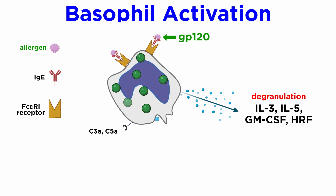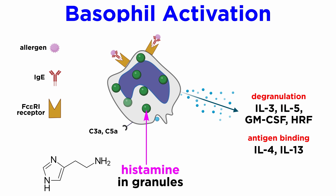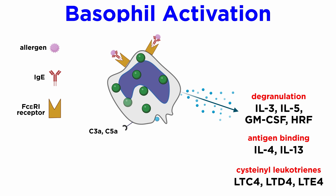The GP120 protein from HIV is considered to be a superantigen-binding IgE, leading to secretion of IL-4 and IL-13. Histamine is the major preformed mediator stored in the basophil granules. Basophils produce three cysteinyl leukotrienes after activation — LTC4, LTD4, and LTE4 — which are potent bronchoconstrictors and increase vascular permeability.